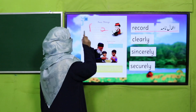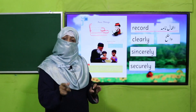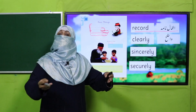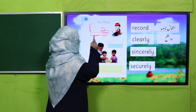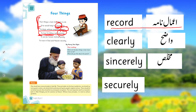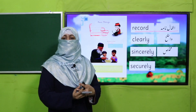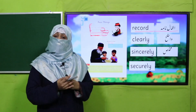The poem says: 'To think without confusion clearly, to love his fellow men sincerely.' You should be very clear in your thinking, and you should be good with everyone — you should love them sincerely.